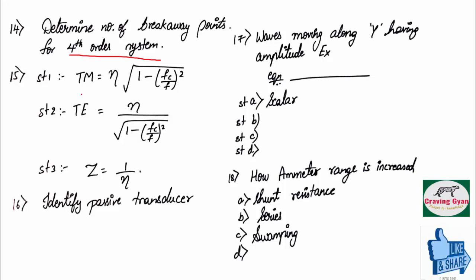Fifteenth question. They have given four statements again. TM equals to eta times of square root of 1 minus FC by FD whole square. True.